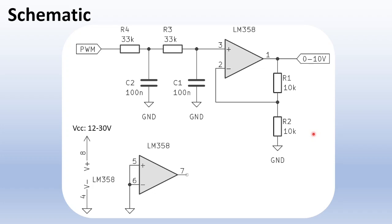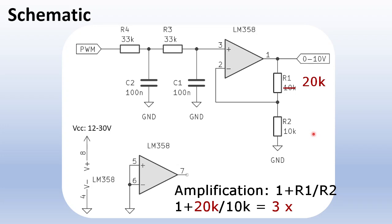If you use a 3.3 volt MCU, for instance an STM32 or ESP32, you will need 3 times amplification by using R1 equals 20K and R2 equals 10K.